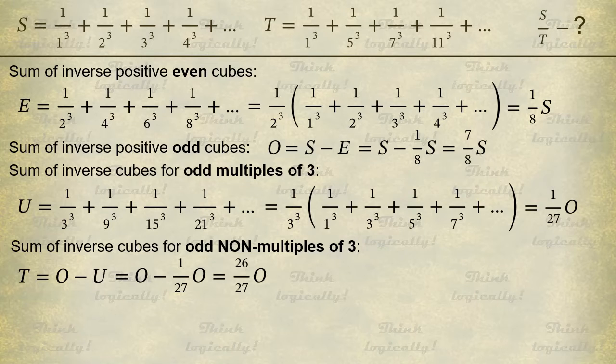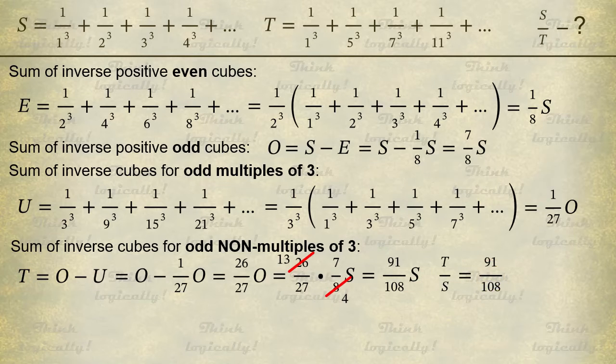But we need T in terms of S. So we substitute the expression for O in terms of S and find that T equals 91 over 108 times S. This means that the ratio T to S is 91 over 108.